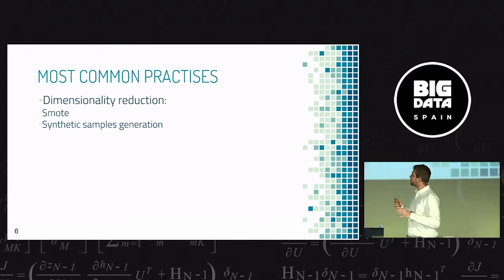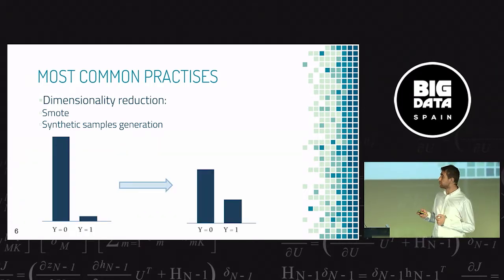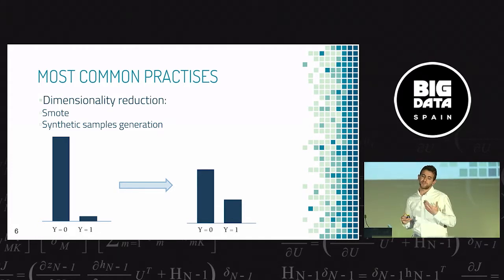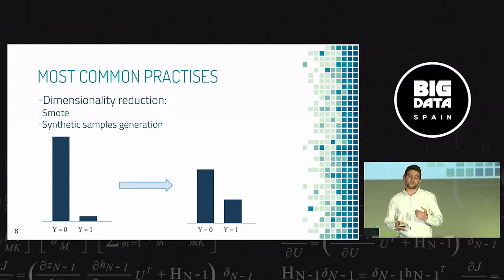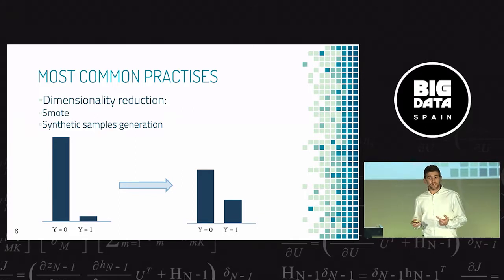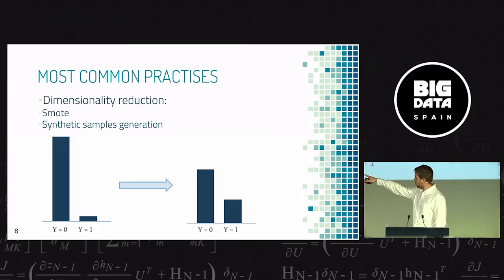We have made a really fast introduction about unbalanced data and now it's time to talk about the most common practice in this field. Most techniques in unbalanced data are related with the correction of the unbalanced proportion. Maybe creating some new synthetic samples from the minority class or maybe deleting some samples from the majority class. Why we do this? Because it's very difficult for an algorithm to work over that case.